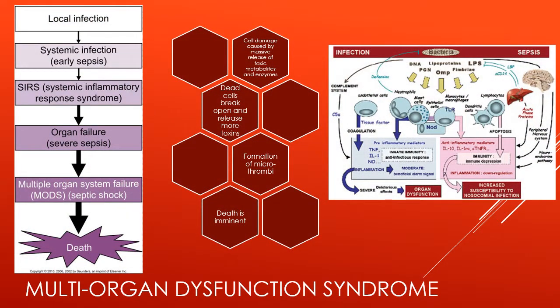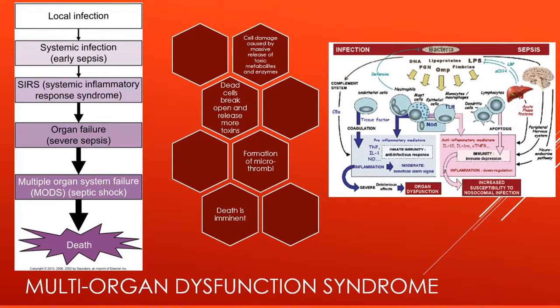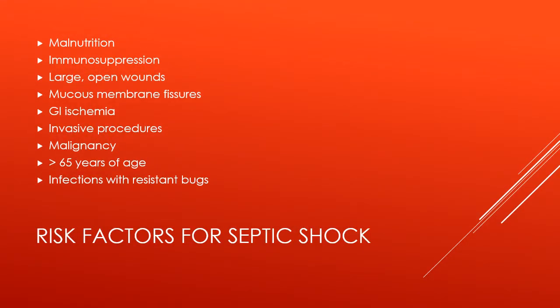With multi-organ dysfunction, cell damage is caused by a massive release of toxic metabolites and enzymes. The dead cells break open and release more toxins, which form microthrombi. Death is imminent at this point. Risk factors for septic shock include malnutrition, immunosuppression, large open wounds, mucous membrane fissures, GI ischemia, invasive procedures, malignancies, age greater than 65, and infections with resistant organisms.